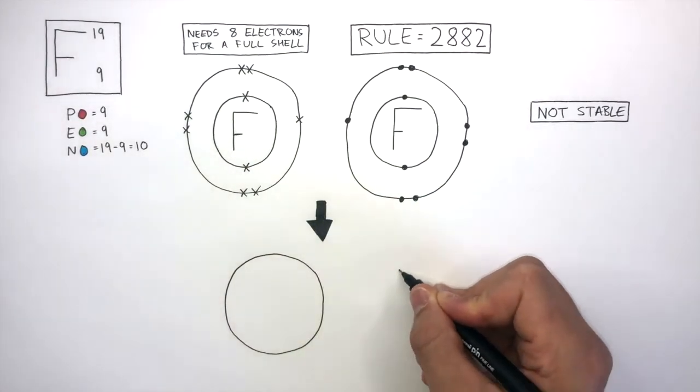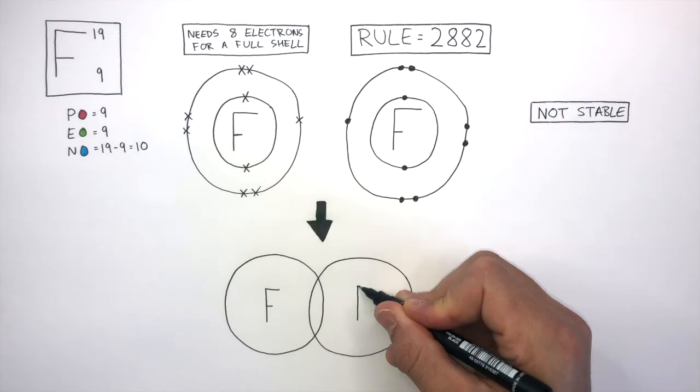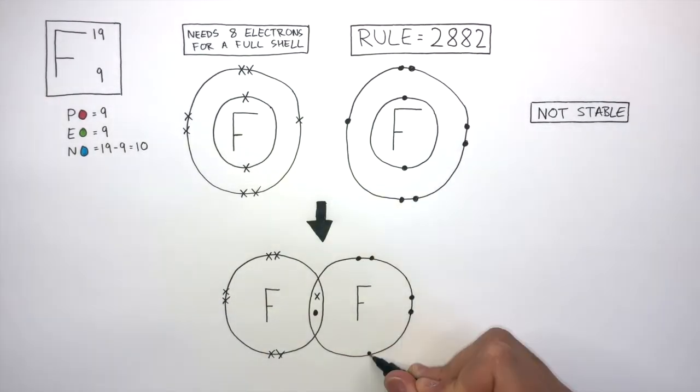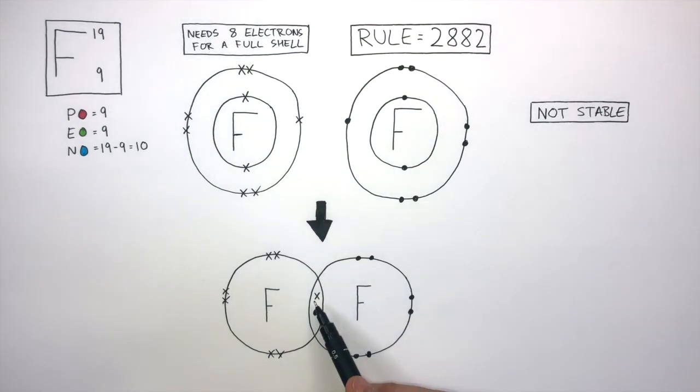The single electron that each fluorine atom has, they overlap so there is now a shared pair of electrons. There's now 1, 2, 3, 4, 5, 6, 7, 8 electrons around this shell so both shells are stable.